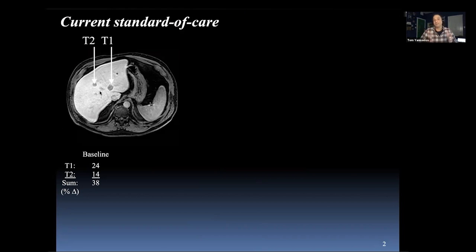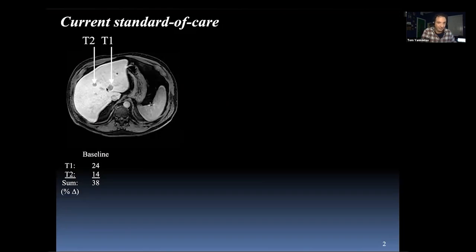When a patient has been diagnosed with a solid tumor malignancy, they come in and get high-resolution CT or MRI, and someone goes in and measures the longest dimension of what are called target lesions. These are two target lesions right here, and they are summed up — this one is about 3.8 centimeters at baseline.